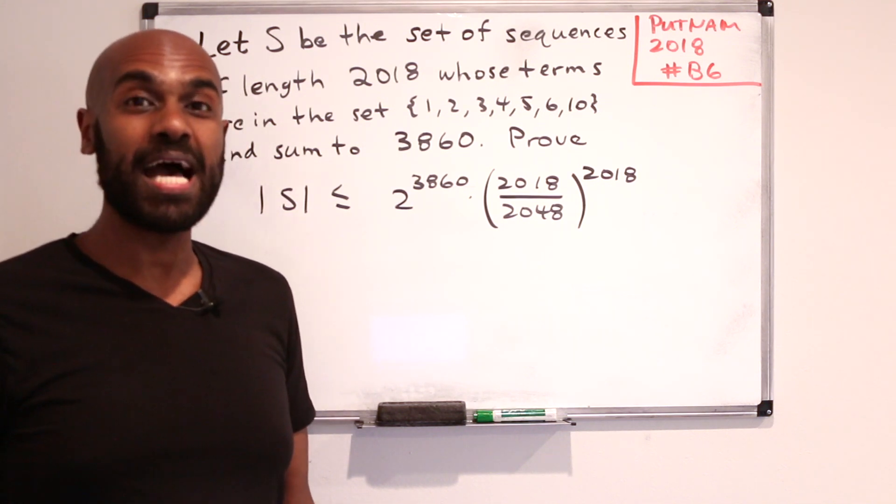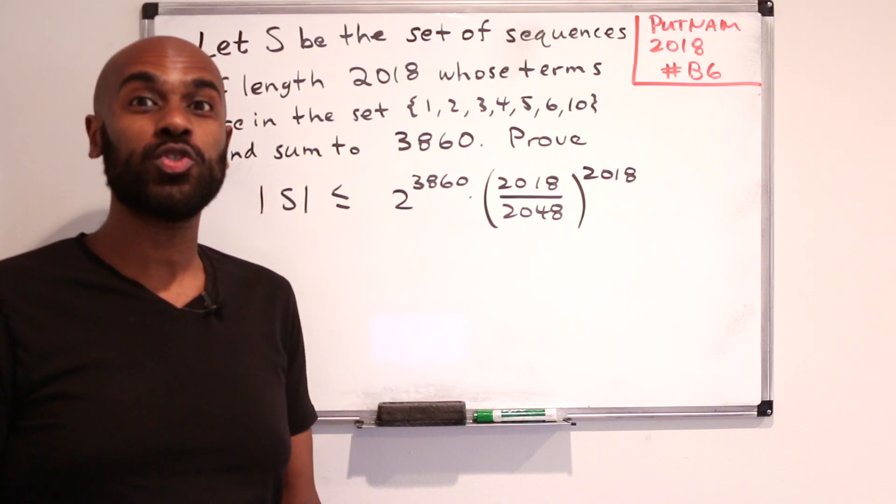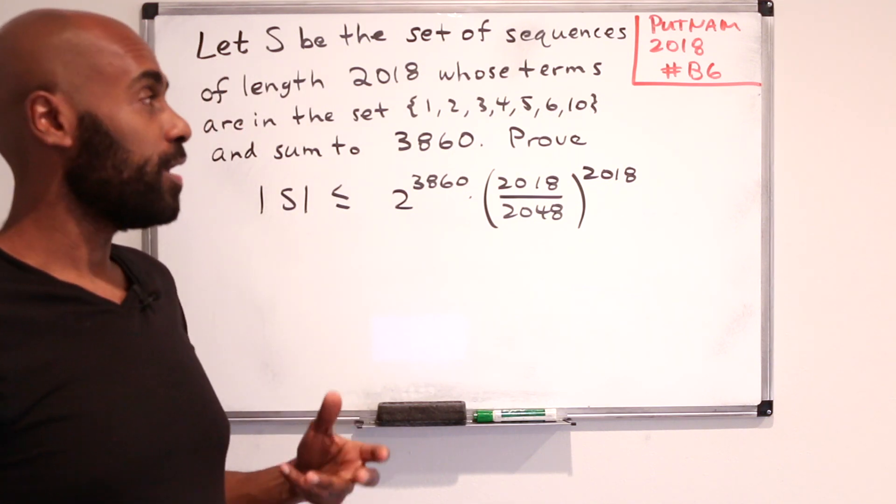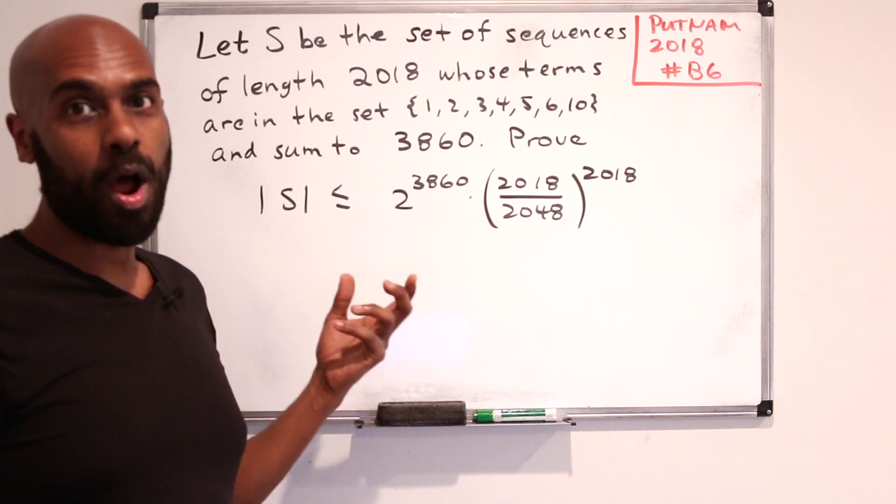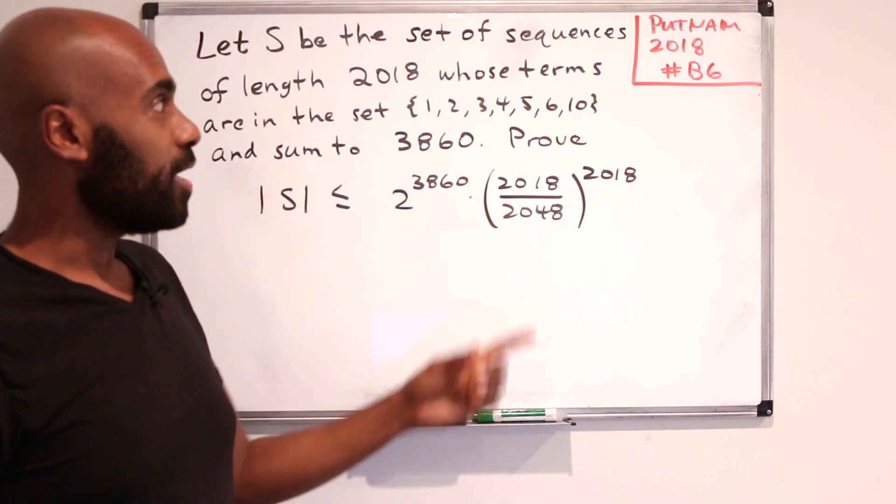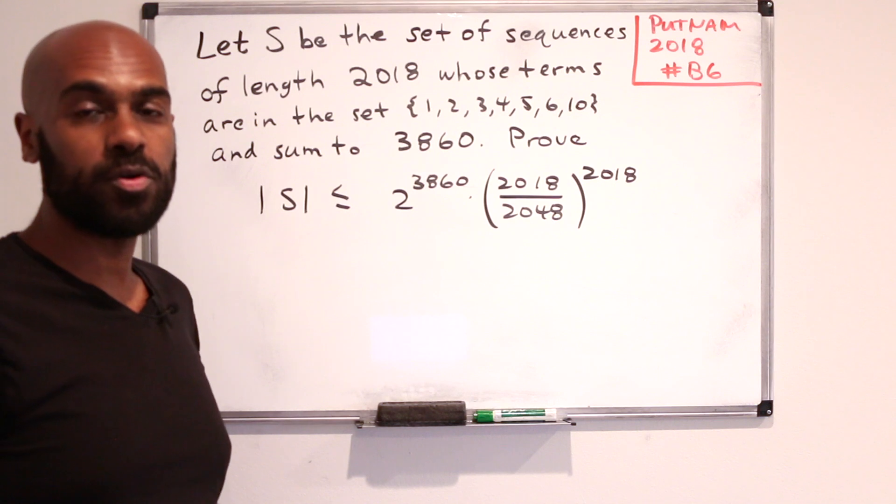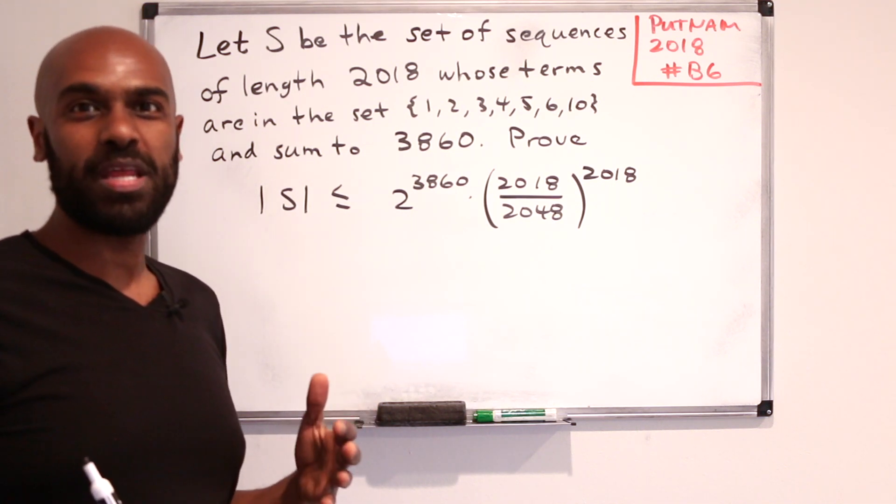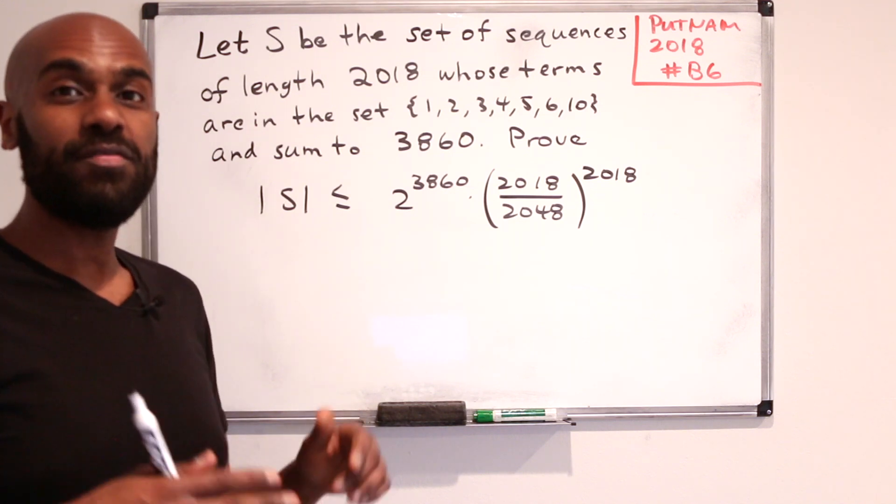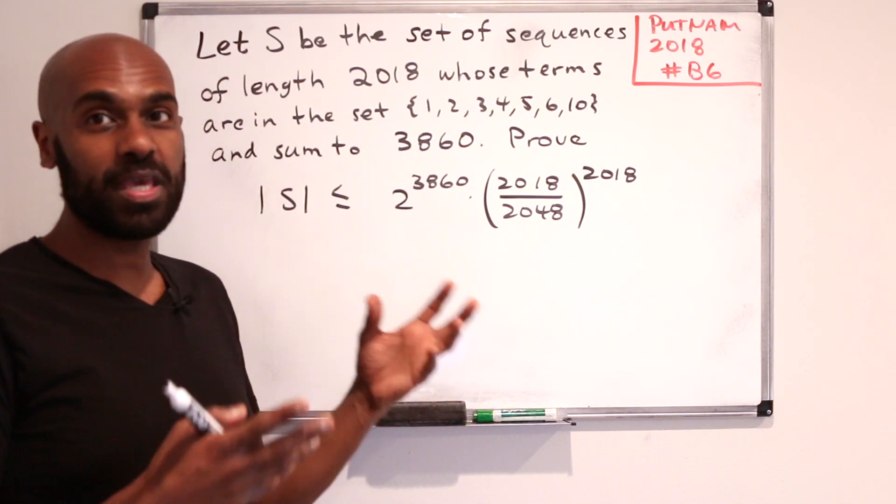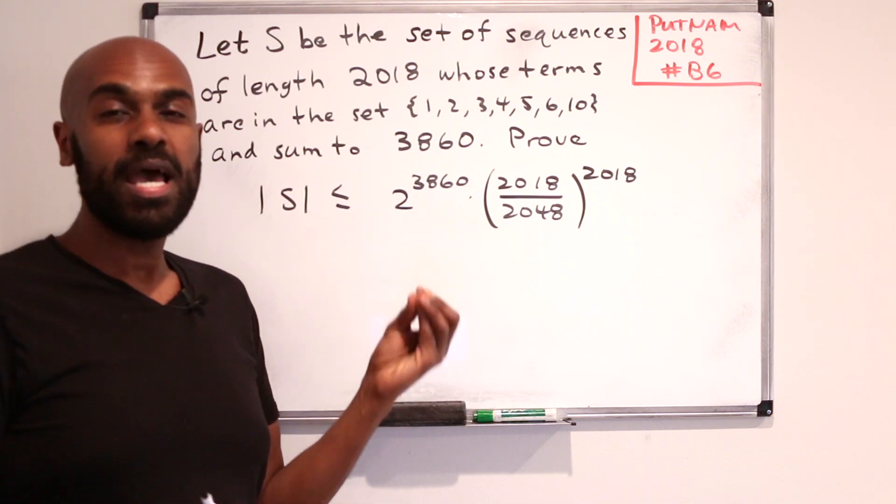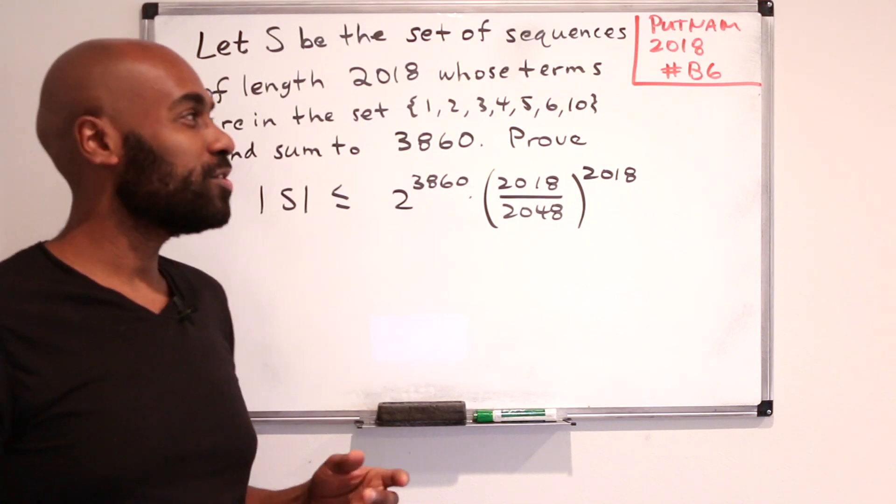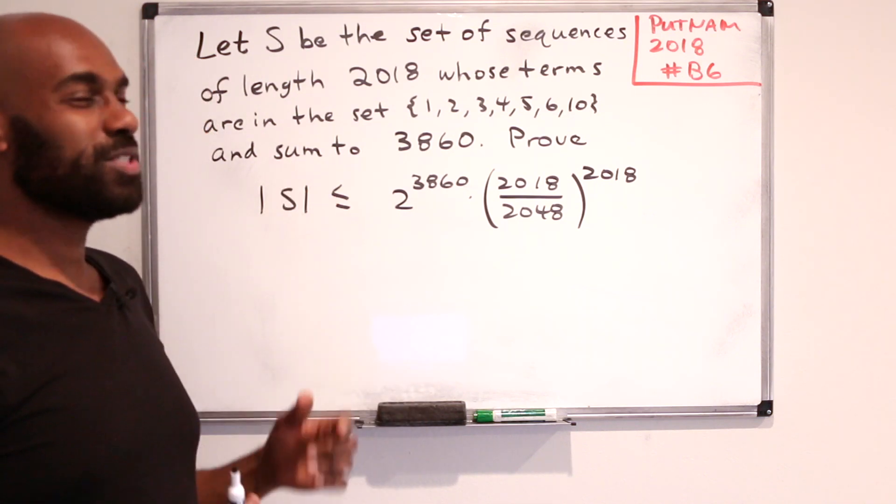In today's video, we're going to discuss how if you're equipped with certain tools that are not necessarily standard in undergrad, it can really take you a long way. This is an example of a problem that really hones that in, and it's Putnam 2018 number B6. We're going to take a look at a solution that actually exploits generating functions. Even if you don't know what that is, we'll explain how to go about thinking about the problem in this way and forward you to some videos on this channel that talk about generating functions in general.